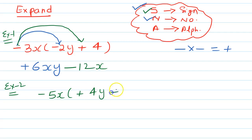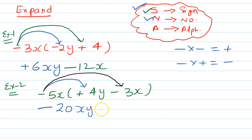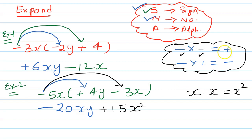Example 2: minus 5x times (plus 4y minus 3x). First product — sign: minus times plus becomes minus; number: 5 times 4 is 20; alphabet: x times y is xy — giving minus 20xy. Second product — sign: minus times minus becomes plus; number: 5 times 3 is 15; alphabet: x times x is x squared — giving plus 15x squared. Remember: same sign add, opposite sign take away.